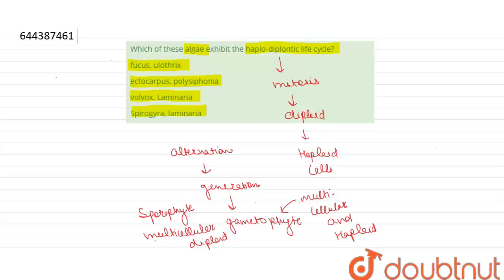Now Ectocarpus undergoes asexual as well as sexual reproduction. The asexual reproduction takes place by bi-flagellate zoospores.